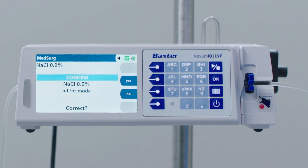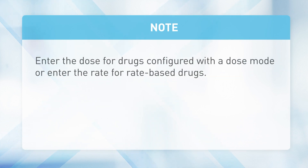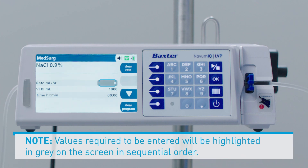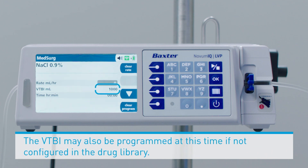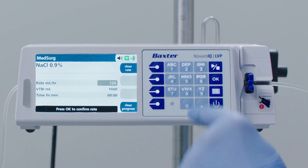The confirmation screen appears. At this screen, you have the following options: press the No soft key to return to the Drug Selection screen, or press the Yes soft key to confirm the selected drug. The infusion programming screen appears. Enter the dose for drugs configured with a dose mode, or enter the rate for rate-based drugs. For drugs configured with a dose, the rate in milliliters per hour is auto-calculated when you enter the dose. Note that values required to be entered will be highlighted in grey on the screen in sequential order. The VTBI may also be programmed at this time if not configured in the Drug Library. Enter the rate and press OK to confirm.